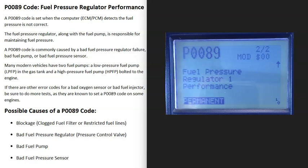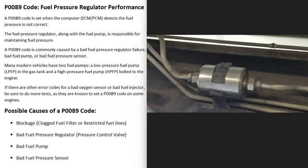The first possible cause of a P0089 code is some kind of blockage in the line — a clogged fuel filter or restricted fuel line. You can go check the fuel filter and replace it. Depending on the vehicle, the layout will be different, but a clogged fuel filter or restricted fuel line is the first thing that could cause this code.